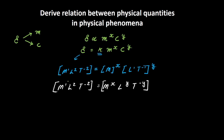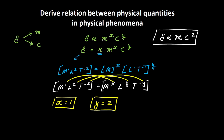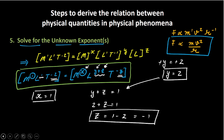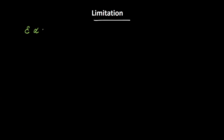Solving for the exponents: x = 1, y = 2, and −y = −2 (consistent). So our relationship is E directly proportional to M¹ · c². You might be familiar with this equation: E = mc², the famous equation by Einstein. I hope with these two examples you are now confident about how to derive the relationship between physical quantities in a physical phenomenon.